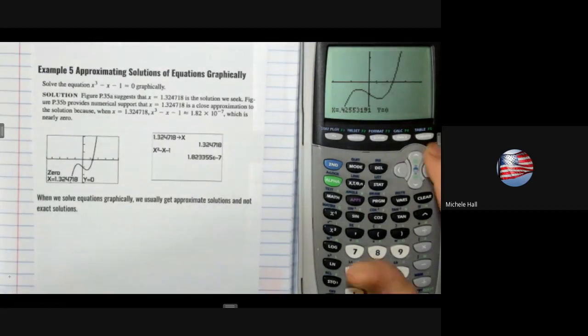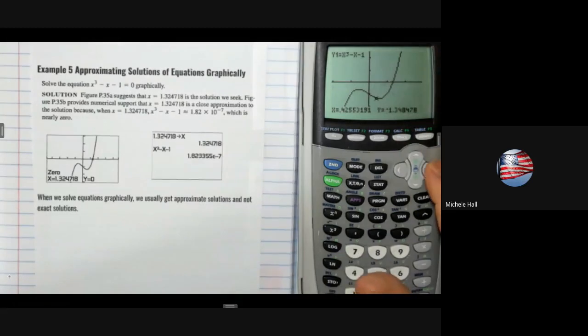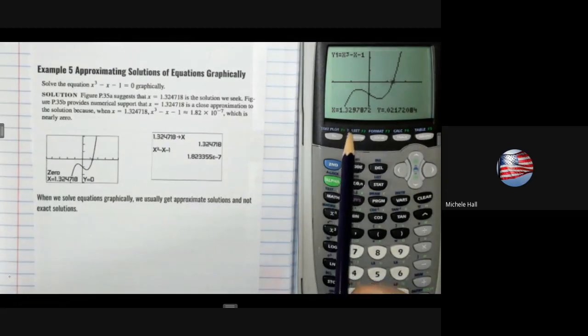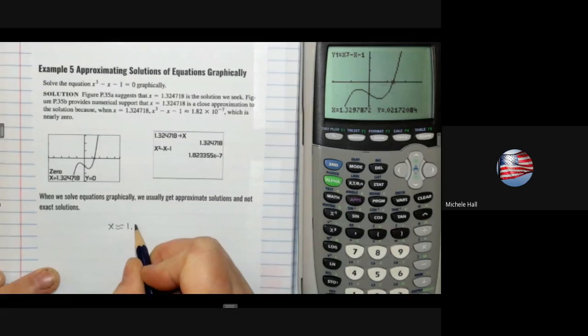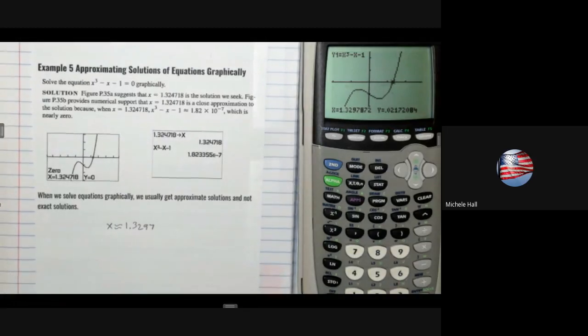I could use my trace button. Let's see approximately what that's going to be. 1.329. So x is approximately 1.3297. That was using the trace button.